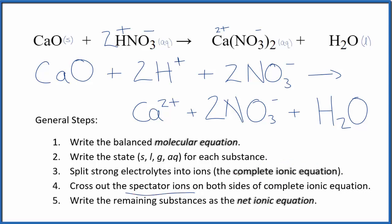Now we'll cross out spectator ions. They're on both sides of the complete ionic equation. On the top, I have the reactants. Down here are the products. I see in the reactants there are two nitrate ions, and also in the products, there are two nitrate ions. These are spectator ions. We're going to cross these out.